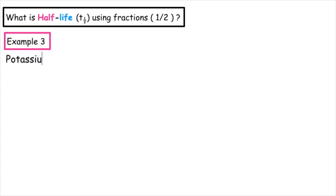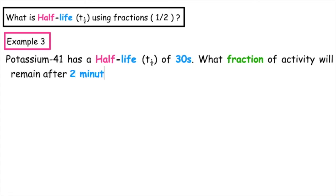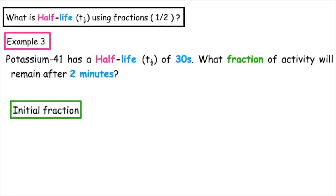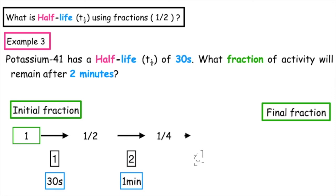This last example: we have potassium-41, which has a half-life of 30 seconds. What fraction of activity will remain after two minutes? We know we're working in fractions, so we're going to start with one. If it undergoes one half-life, which is 30 seconds, we'll have a half left over. If it undergoes a second half-life, that will give us a total of one minute, which will leave a quarter.